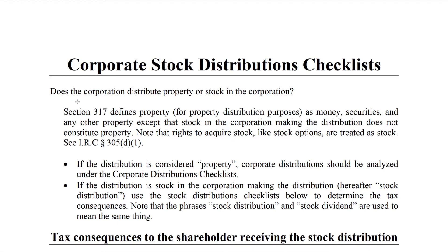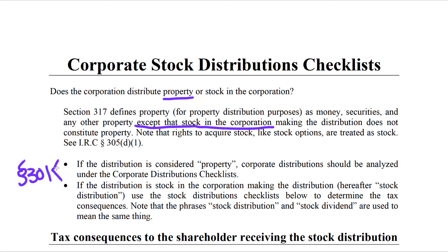The first question: does the corporation distribute property or stock in the corporation? Section 317 defines property for purposes of property distributions as money, securities, and other property — except that stock in the corporation making the distribution does not constitute property. So if you have a property distribution, you're going to use the Section 301 corporate distributions checklist.